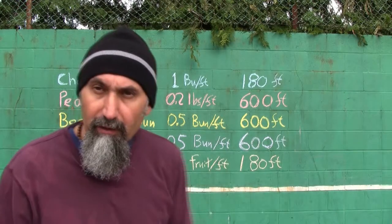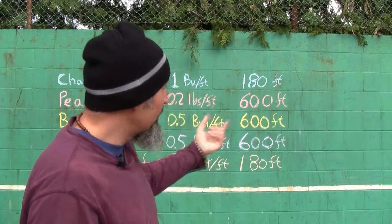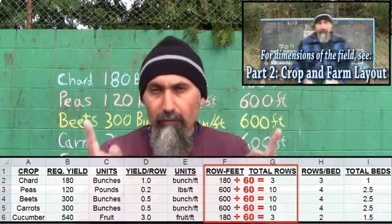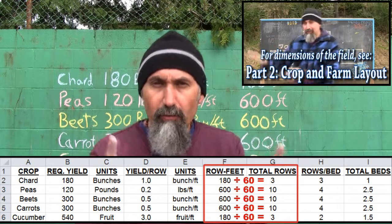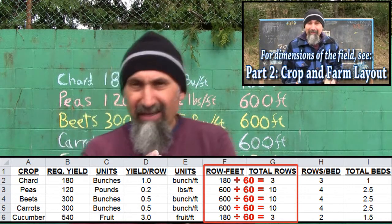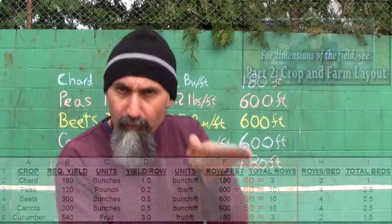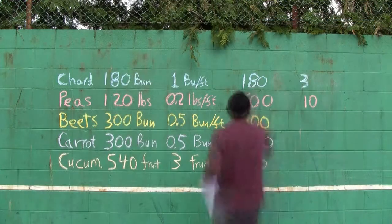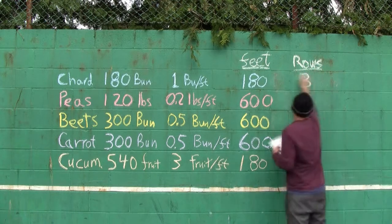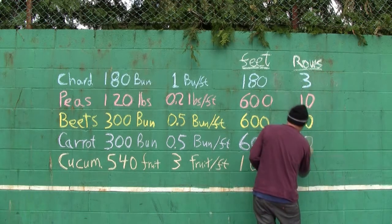To figure out how many rows that equals, we know our rows are 60 feet long, so we divide each of those numbers by 60. That gives us the total number of rows: three rows of chard, 10 rows of peas, 10 rows of beets, 10 rows of carrots, and three rows of cucumbers.